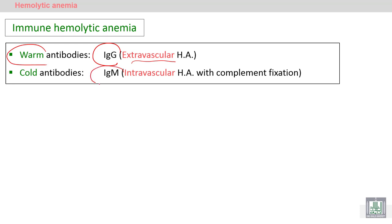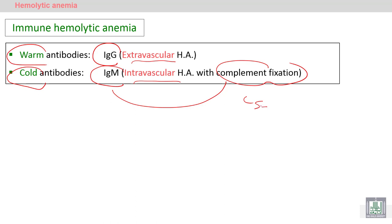If the antibodies are IgM, they are called cold antibodies. IgM works below 37 degrees and leads to intravascular hemolytic anemia with the aid of the complement. IgM plus complement fixation — C5, C6, C7, C8, C9 — forms what is called the membrane attack complex, or MAC, which leads to perforation and destruction of the red blood cells.